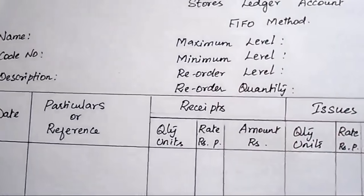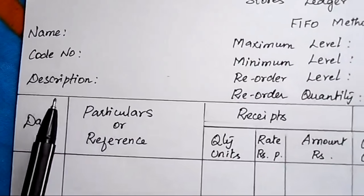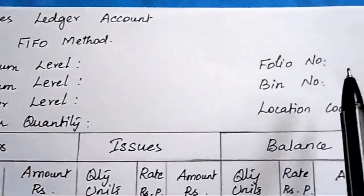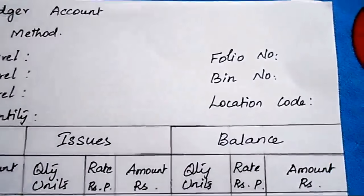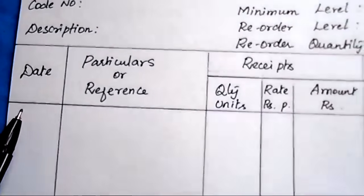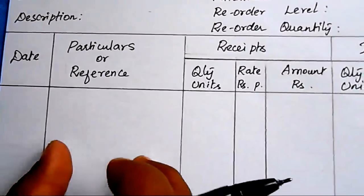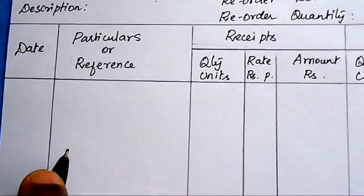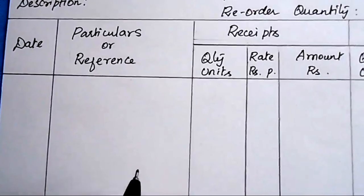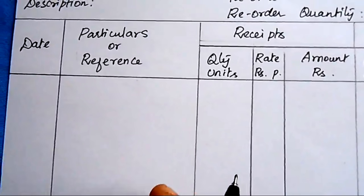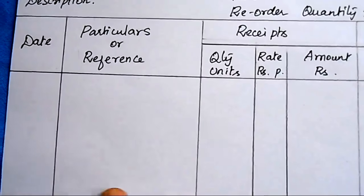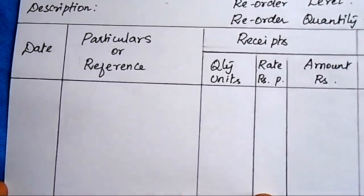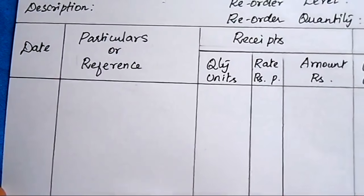This is the general standard format of the store's ledger account. It includes: name, code number, description, maximum level, minimum level, reorder level, reorder quantity, folio number, bin number, and location code. You record the date of each transaction in the date column. In the particulars column, when receiving material from a supplier, write the Goods Received Note number; when issuing to production, write the Material Requisition number.